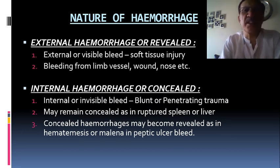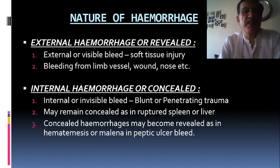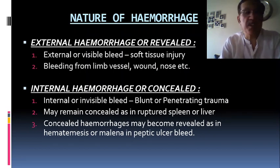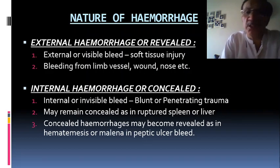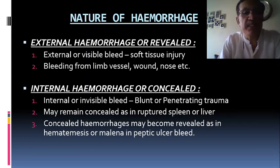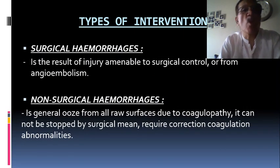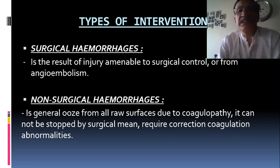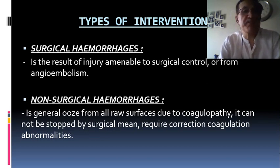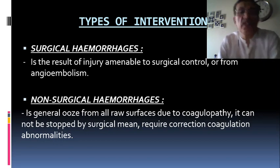By nature: External hemorrhage is visible bleeding from soft tissue, limbs, or bone. Concealed or internal hemorrhage is not visible to the naked eye — it may be due to blunt or penetrating trauma to the abdomen or chest, remaining concealed as in ruptures of the spleen or liver, hemoperitoneum, or hemothorax. Concealed hemorrhage may become revealed, as in hematemesis in peptic ulcer disease. By intervention: surgical hemorrhages are amenable to surgical control or angioembolism. Non-surgical hemorrhage from coagulopathy requires correction of coagulation abnormalities.